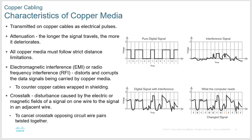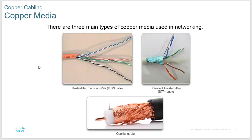To counter EMI, you can get copper cable wrapped in shielding. There's also an issue called crosstalk — electrical or magnetic fields from one wire jumping to an adjacent wire. To eliminate that, the wire pairs are twisted together, which is why copper cable is known as twisted pair. Unshielded twisted pair (UTP) is the most common — eight wires paired as orange/orange-white, blue/blue-white, green/green-white, and brown/brown-white. You can also get shielded twisted pair (STP) or coax cable, though coax is rarely used anymore except for cable TV. The main takeaway: we twist the pairs to avoid crosstalk.